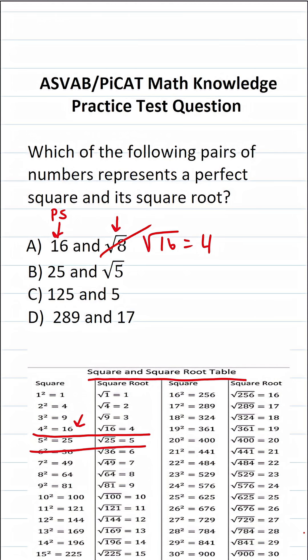25 is in fact a perfect square, but that said, the square root of 25 is 5, not square root 5, so that one's not correct.